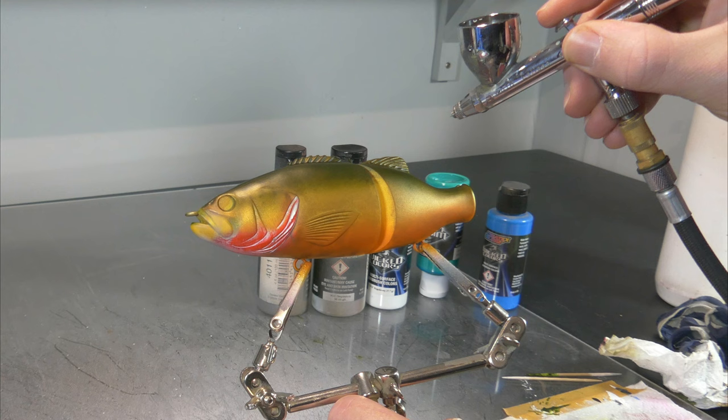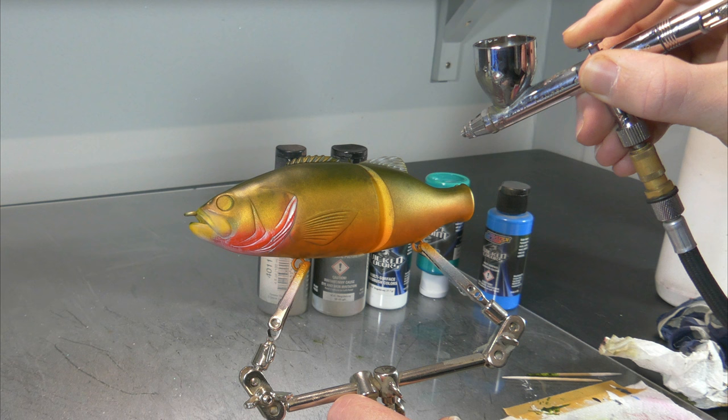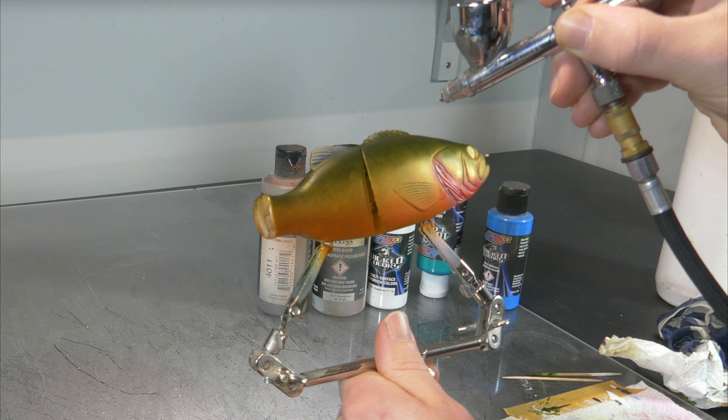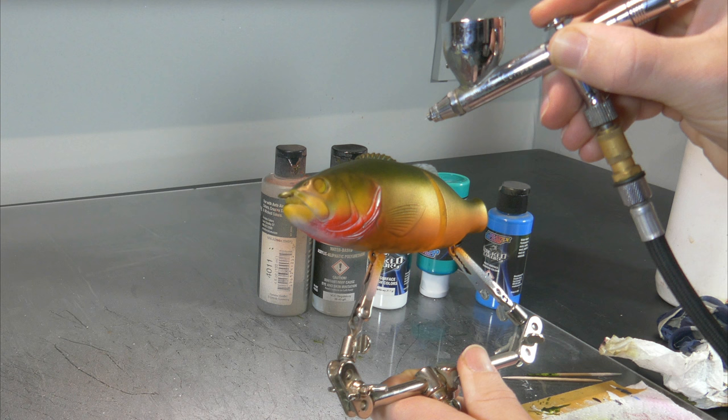Now with some thinned down Vallejo game air white I'm just painting those two fins on the back a little bit white again because I want to make them blue, and to make that blue a little bit more visible we need a white base coat. But note that I'm using a very reduced white so that I still got some texture showing underneath and that white is not plain white, there's a little bit of definition going on there.